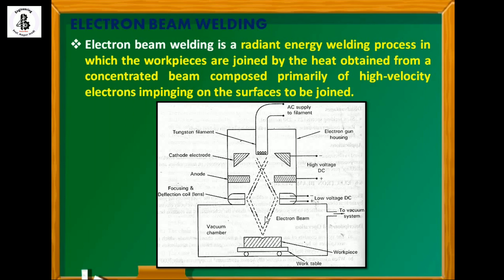The whole system is kept in a vacuum because the basic principle is that the kinetic energy of the electrons is converted into heat energy. This requires a highly concentrated beam, which is why the vacuum chamber is needed for the electrons to impinge easily onto the surface of the workpiece. This is the basic setup for EBW. For the filament it uses an AC power supply, for the anode and cathode a high-voltage DC supply, and for the focusing lens a low-voltage DC supply. The whole system is fully automatic.